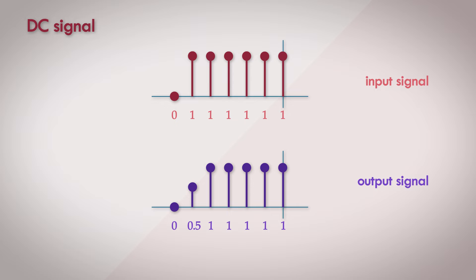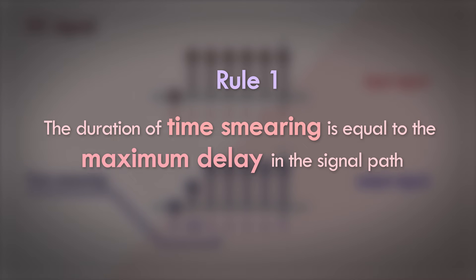So at DC or 0 Hz, the output equals the input. However, there is a one sample delay in the response causing the leading edge of the step input to be smeared out by one sample. This is called time smearing and is a normal consequence of filtering. This gives us the first rule of feedforward filters: the amount of time smearing is equal to the maximum delayed path through the feedforward branches.